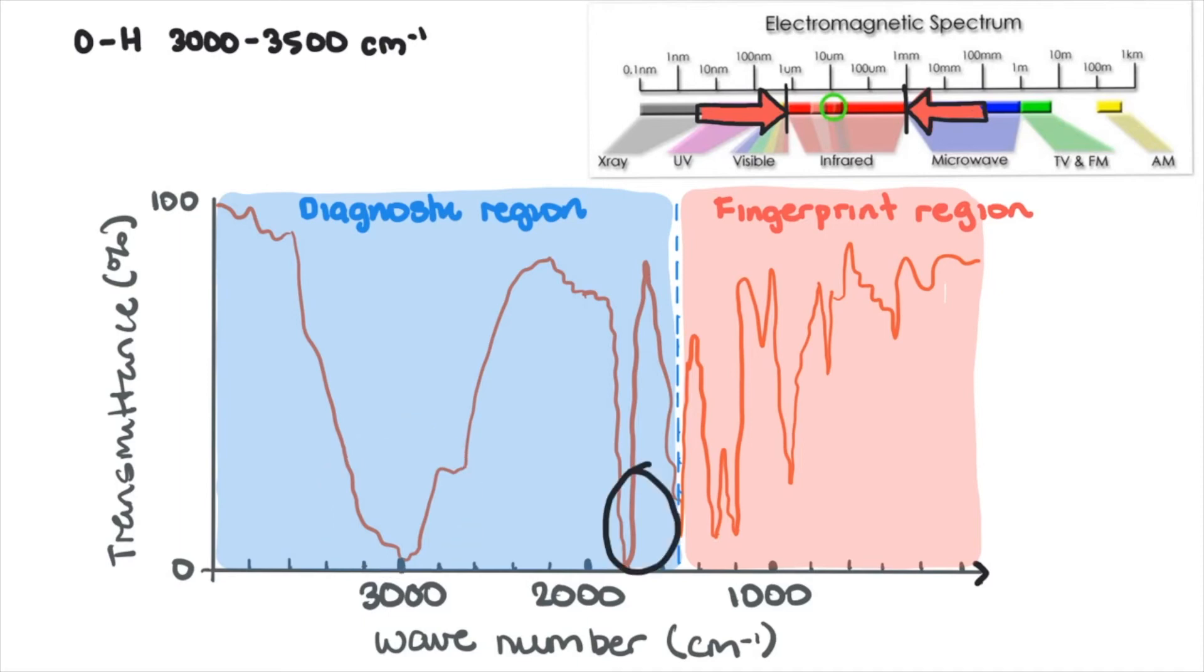This represents a carbonyl stretch with a range of 1670 to about 1780. Once again, hardly any of it is making its way to the detector, so we also know the sample contains a carbonyl functional group. The combination of these two peaks suggests we're dealing with a carboxylic acid. Also, this peak at 1200 is common to most carboxylic acids.